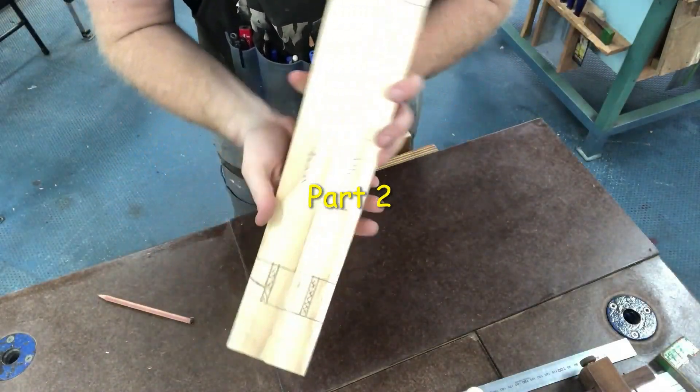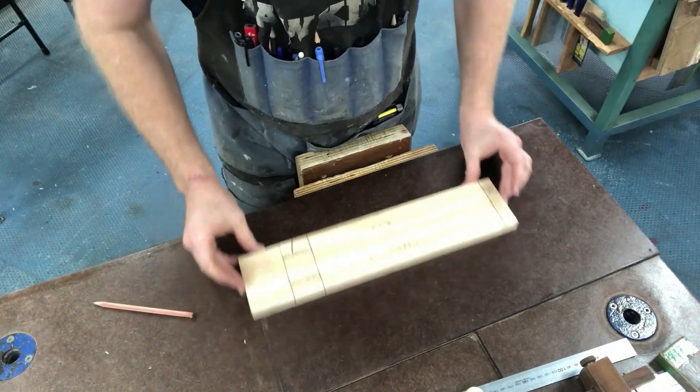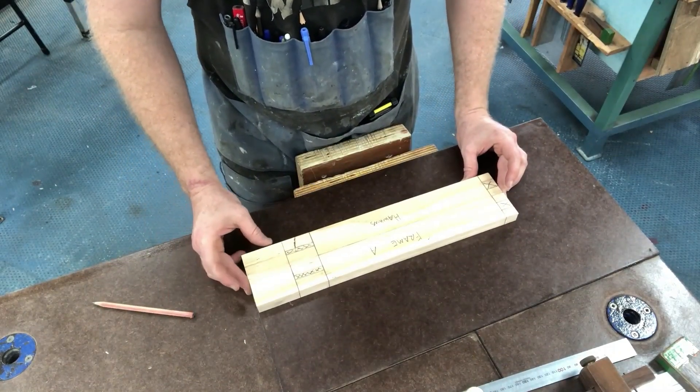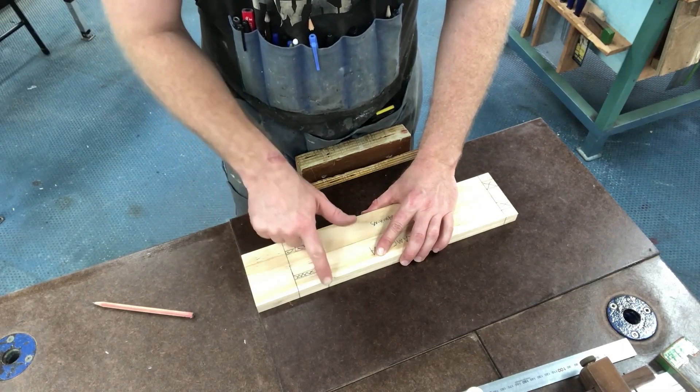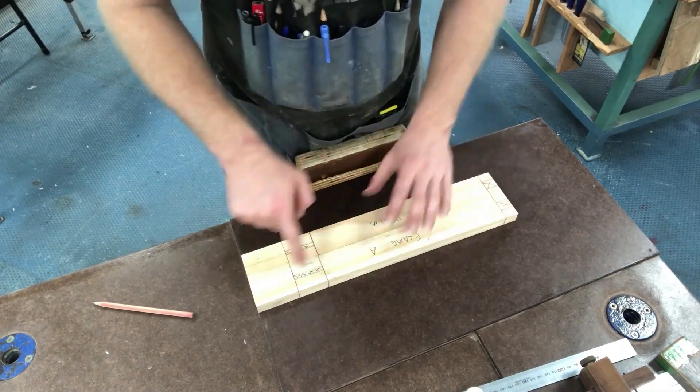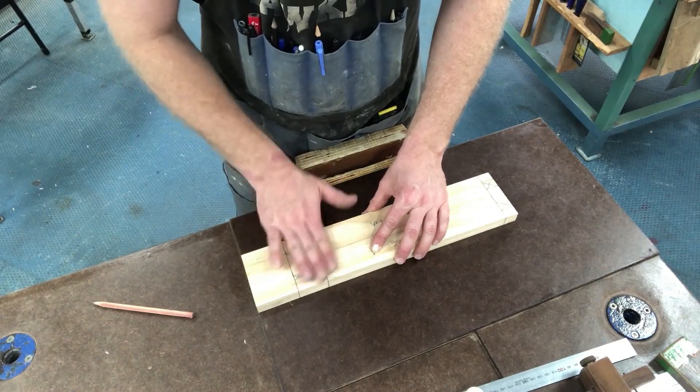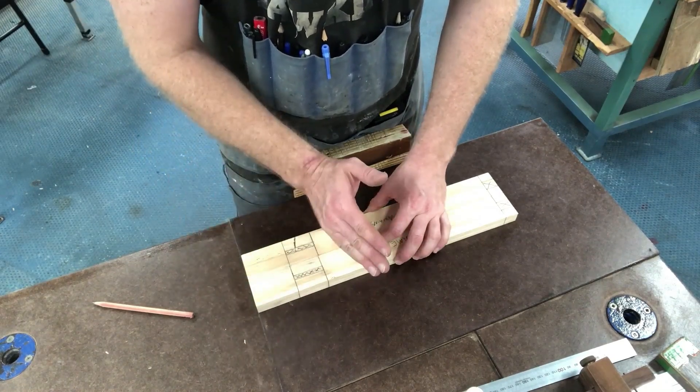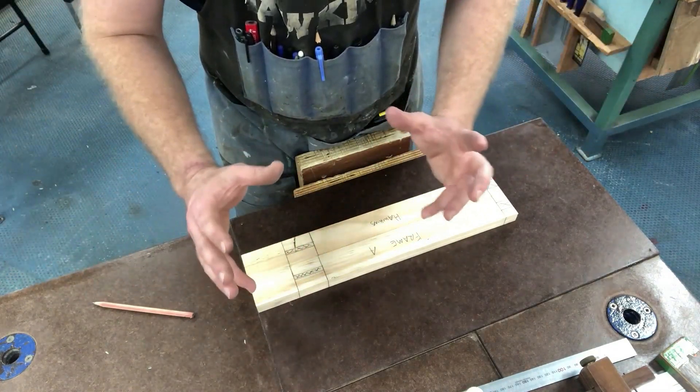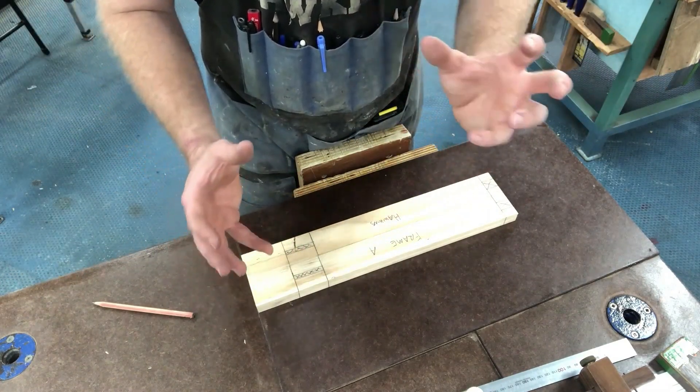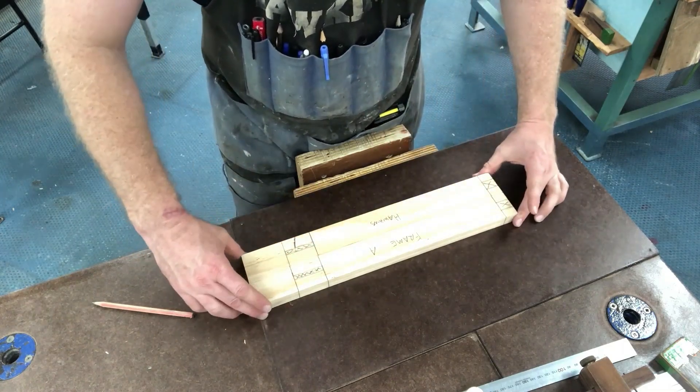Once you have finished marking out both of your legs for frame A, just place both of them on your bench, get them flush on the end, and check that all of the lines match up. If there's a problem here, if something doesn't match up, you can fix it now quite easily. If you start cutting everything out and then you find it doesn't match when you go to put your frame together, it won't fit nicely, it won't be square, and you're going to have some problems down the track.